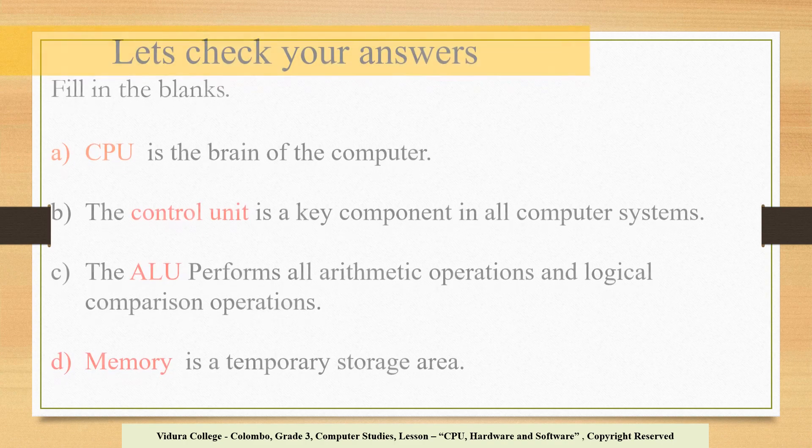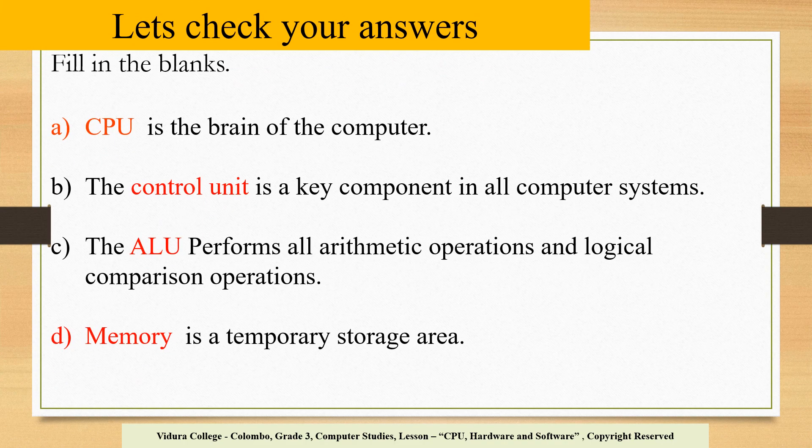Now, let's check the answers. For question A, CPU is the brain of the computer. Question B, the control unit is a key component in all computer systems. Question C, the ALU performs all arithmetic operations and logical comparison operations. For D, memory is a temporary storage area.